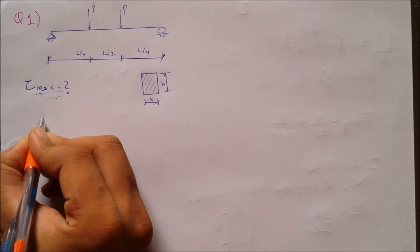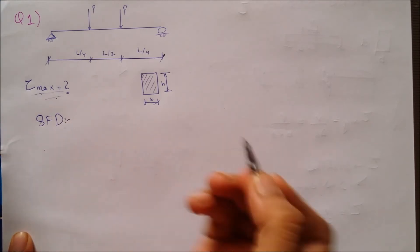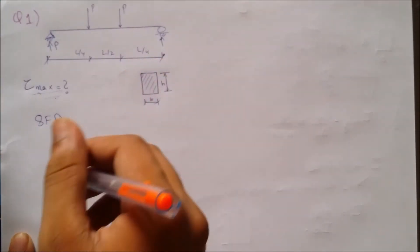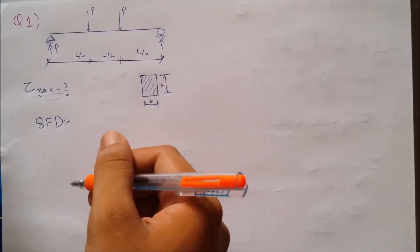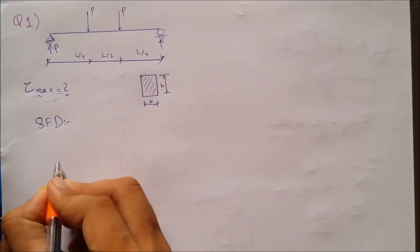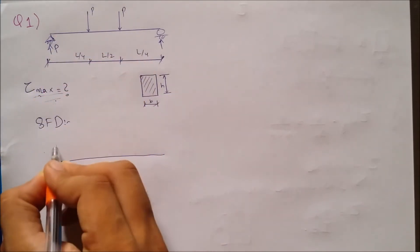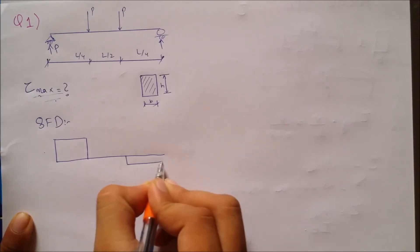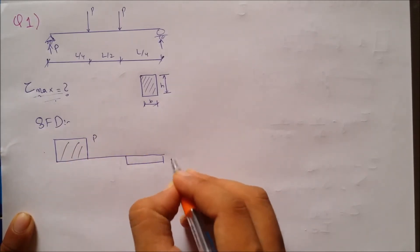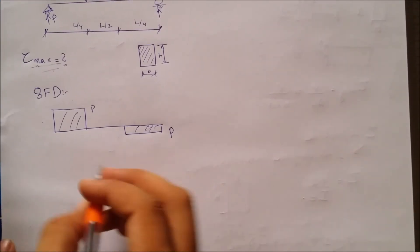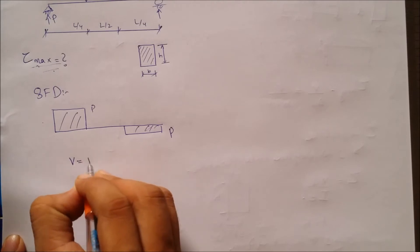Let's construct the shear force diagram. For that, we need reactions. The reactions will be simply calculated as P and P using equilibrium equations as discussed in previous videos. The shear force diagram will follow, with magnitude P. From the shear force diagram, we pick up the maximum magnitude of the shear force, which is P. So we take V equals P.